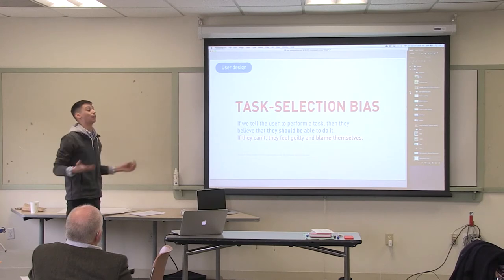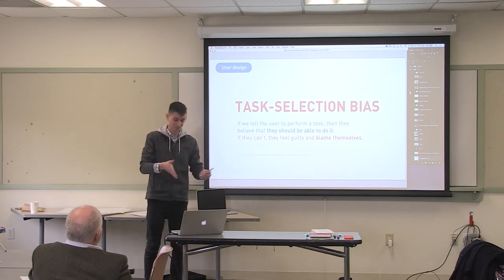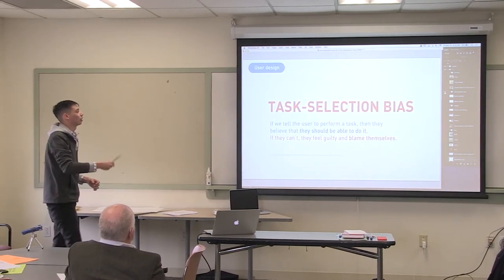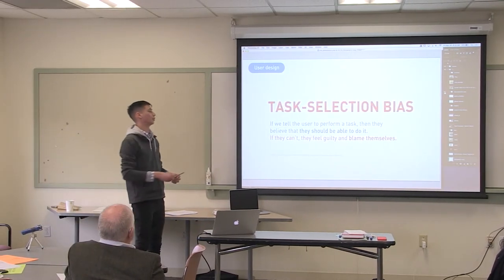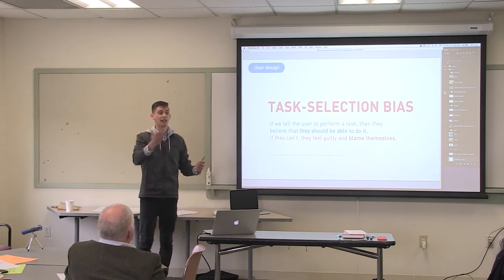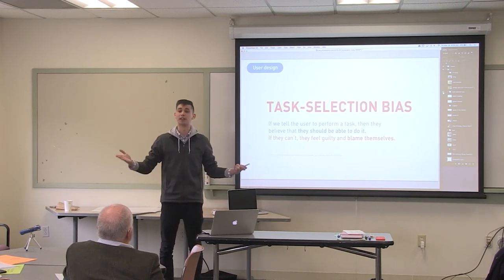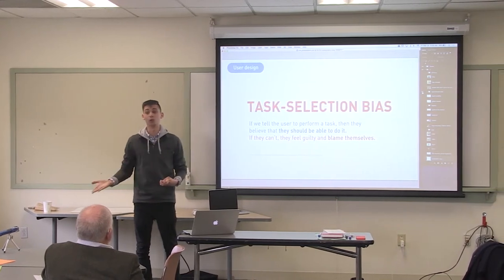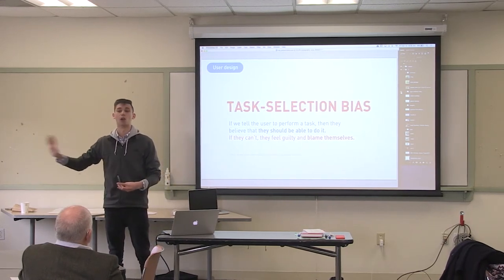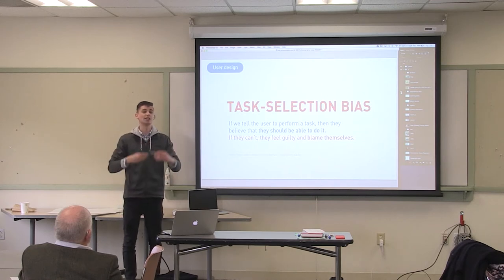When you design for the average, you design for this very specific person. I found a psychology term I like a lot: task selection bias. We tell a person to perform a task, they believe they should be able to do it, and when they can't, they feel guilty and blame themselves. If we say these are small, medium, and large sizes for clothing and you don't fit in them, you're 'wrong.' You've been marginalized and no longer matter. In essence, this is what happened, and we've continued to use this idea of averages for another hundred years.